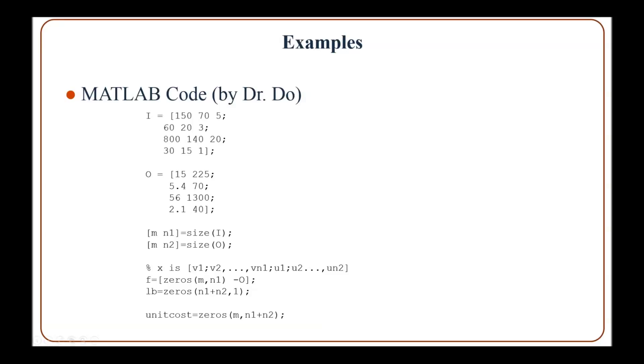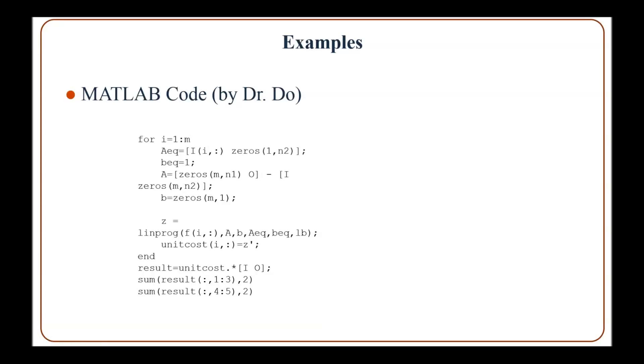The function F here is the objective function. A negative sign is used because we need to maximize the objective function, and MATLAB solves minimization problems, so that's why we need to put a negative sign here. Then in the loop, for each iteration we set the equality and inequality constraints and call linprog to solve the optimization problem for each DMU.